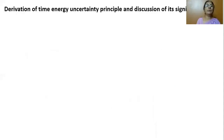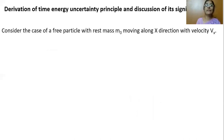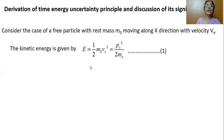Let us now derive the time energy uncertainty principle and discuss its significance. Consider the case of a free particle, for example an electron, with rest mass m0 and moving along the x direction with velocity vx. The kinetic energy of the particle is given by E equal to half m0 vx squared. Now multiply this expression by m0 and divide by m0, giving half m0 vx squared by m0.